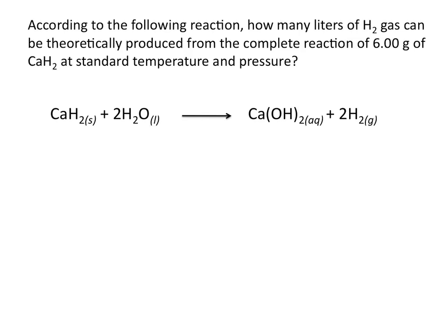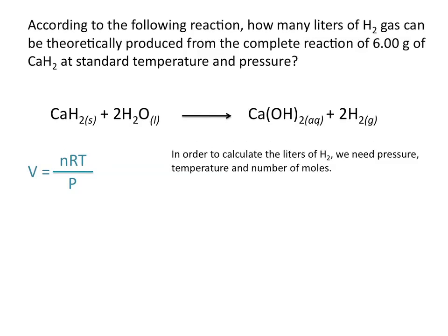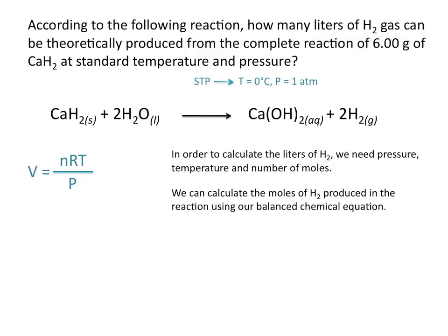Let's look at a slightly more complicated example. According to the following reaction, how many liters of H2 gas can theoretically be produced from the complete reaction of 6 grams of calcium hydride at standard temperature and pressure? We know that the ideal gas law is PV equals NRT, and we're solving for volume, so we need values for N, T, and P. The problem tells us this reaction occurs at standard temperature and pressure: 0 degrees Celsius and 1 atmosphere. The only thing left to find is the number of moles of H2, which we can calculate using our balanced chemical equation.